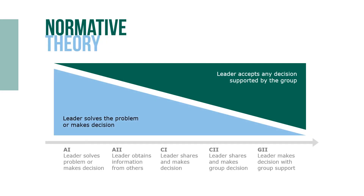As shown here, those styles vary from autocratic decisions on the left, in which leaders make decisions by themselves, to consultative decisions in the middle, in which leaders share problems with subordinates but still make the decisions themselves, to group decisions on the right, in which leaders share the problems with subordinates and then have the group make the decision.